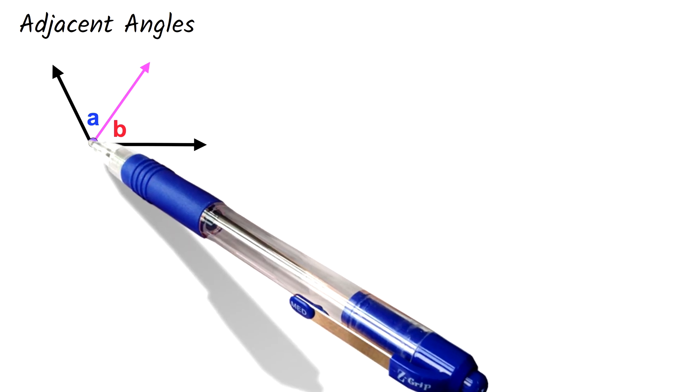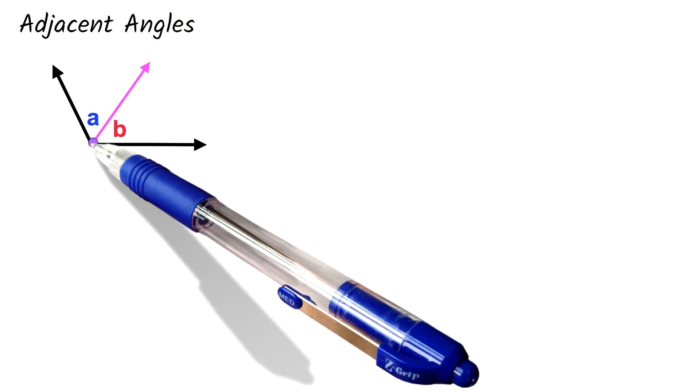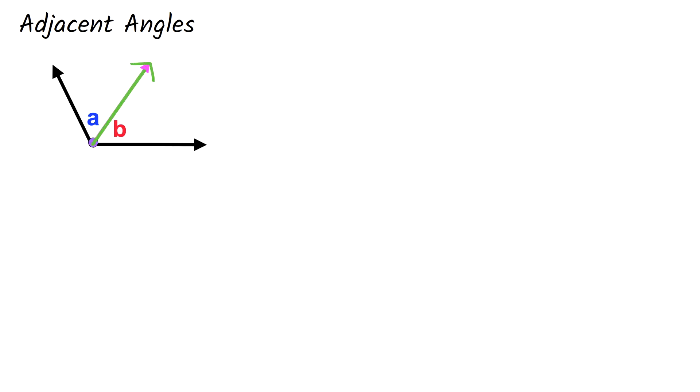Adjacent angles are two angles that share a common side and a common vertex. These two angles, that's angle A and angle B, are adjacent. Notice that they have the same vertex, which is basically the corner point. Also, they share this side. So adjacent angles are like one angle that has been divided into two, by this green line.